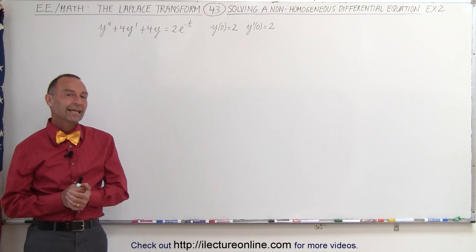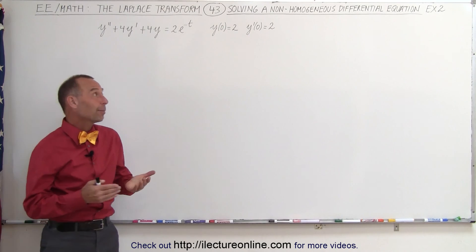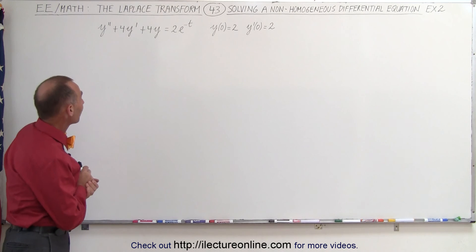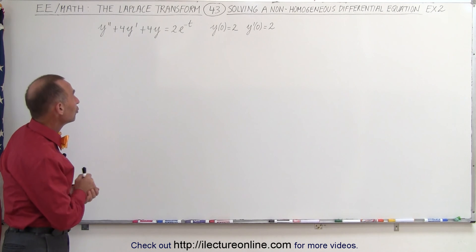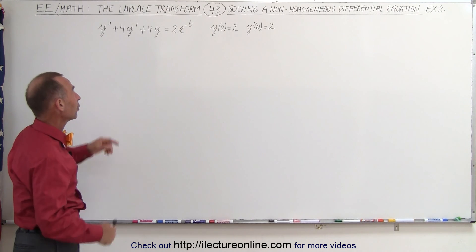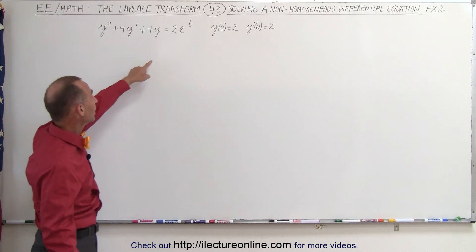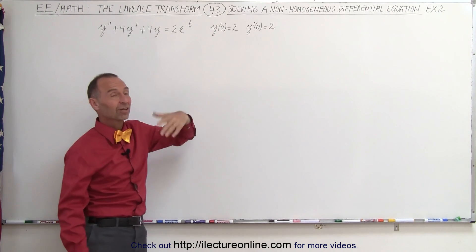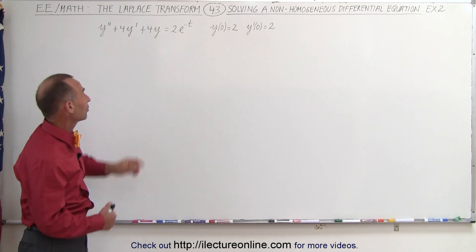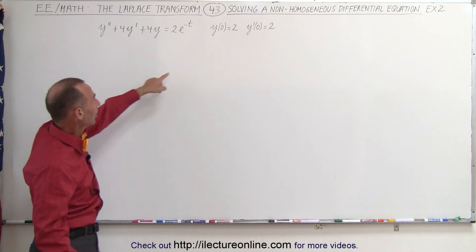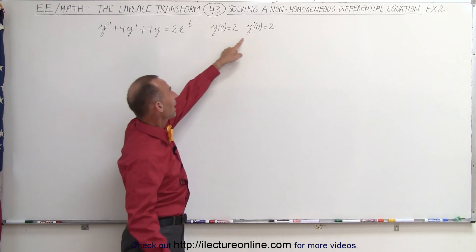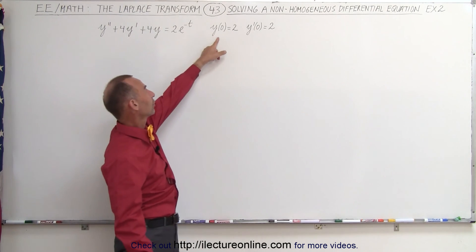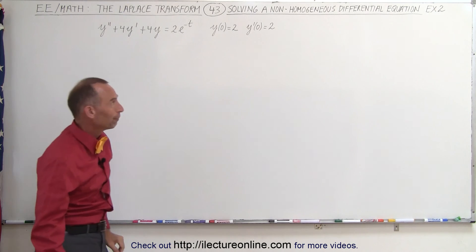Welcome to Electron Line. Here's another example of how to solve a non-homogeneous differential equation using the Laplace transform. Notice that the driving function is 2e to the minus t — a decaying exponential function. We have two initial conditions: the function evaluated at zero and the derivative of the function evaluated at zero.